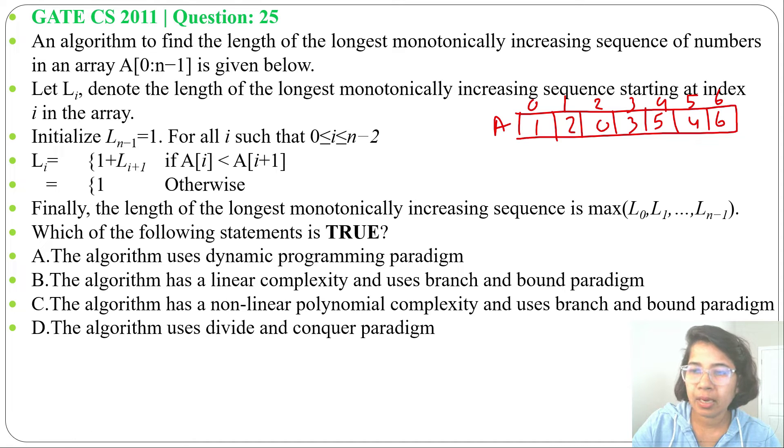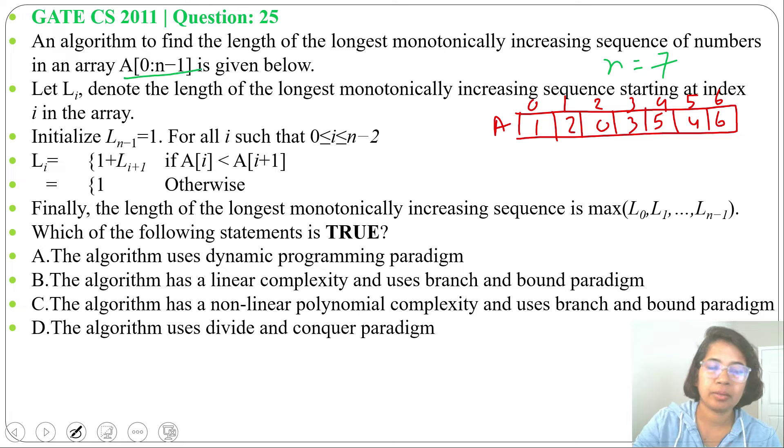Let this be an array with index starting from 0 to 6. Here n equals 7, index starts from 0 to n-1. Now initial condition is L_(n-1) equals 1, so L_6 will be 1.